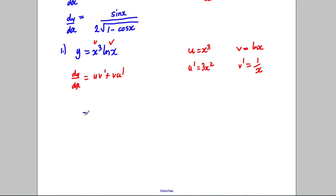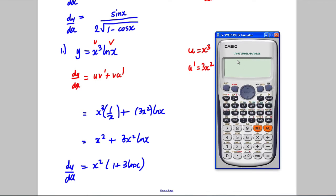So dy/dx equals x cubed times 1 over x plus 3x squared times ln x, which simplifies to x squared plus 3x squared ln x. Factoring out x squared gives x squared times 1 plus 3 ln x. Again, check with the calculator.